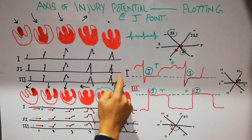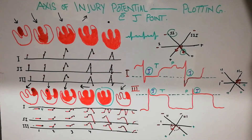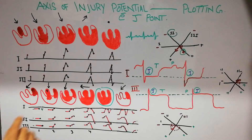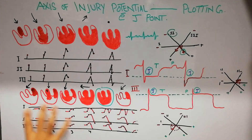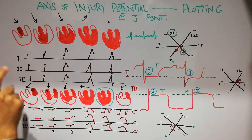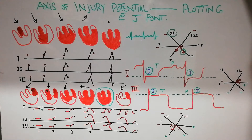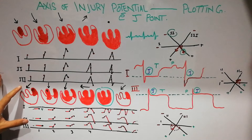Then we discussed the vector analysis for the current of injury. When there is a current of injury, some area of the heart remains partially or completely depolarized, and there is a current flow present even between heartbeats — present all the time. When depolarization starts in this case, it is not starting from the zero reference line. In the normal situation it starts from zero, but in the current of injury it does not. So when the current of injury is present, the vector is slightly deviated.